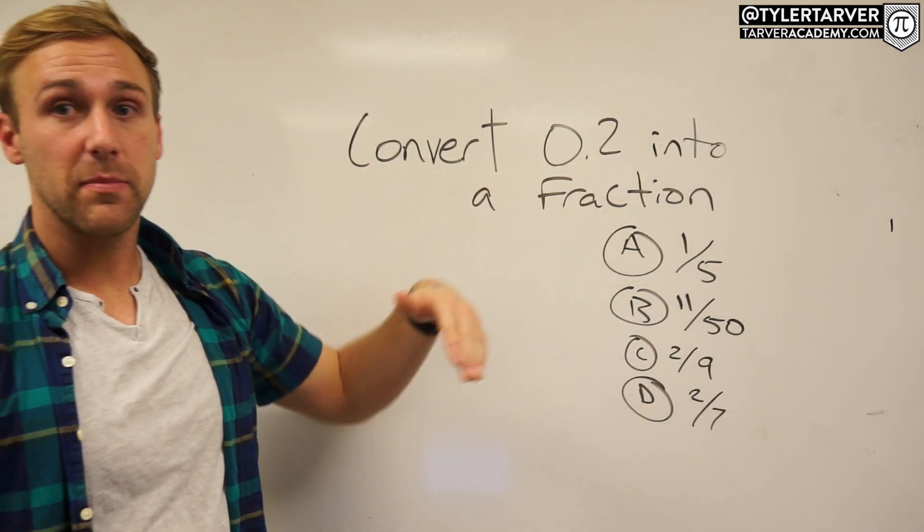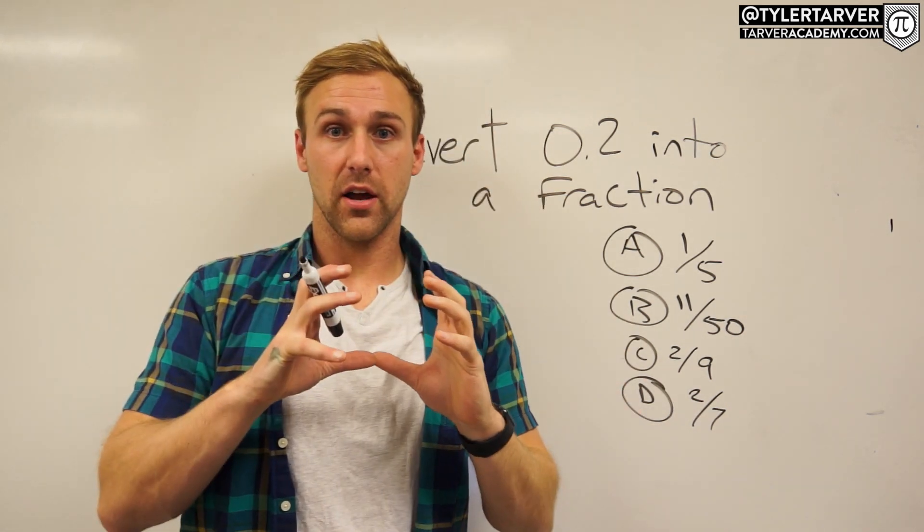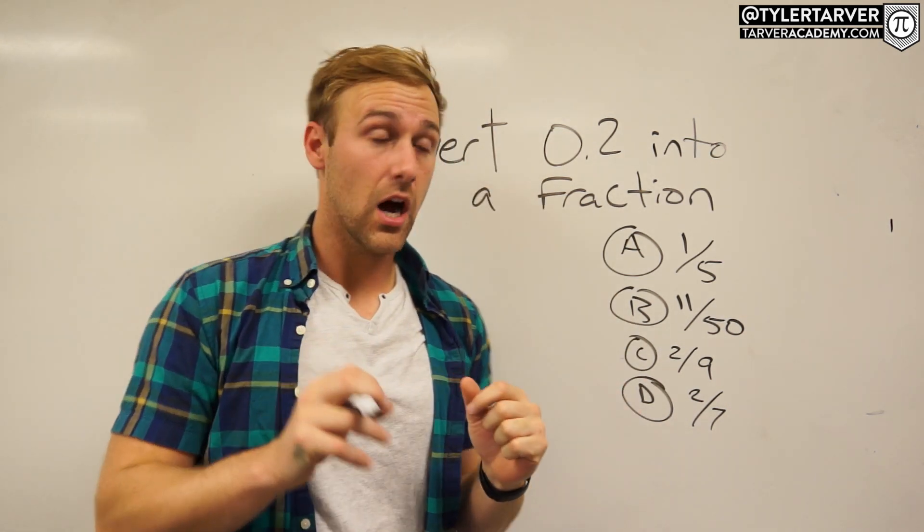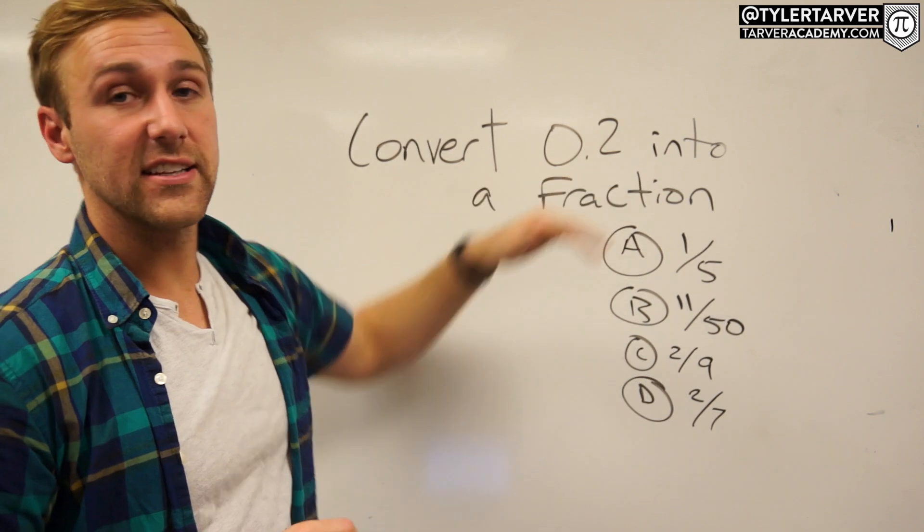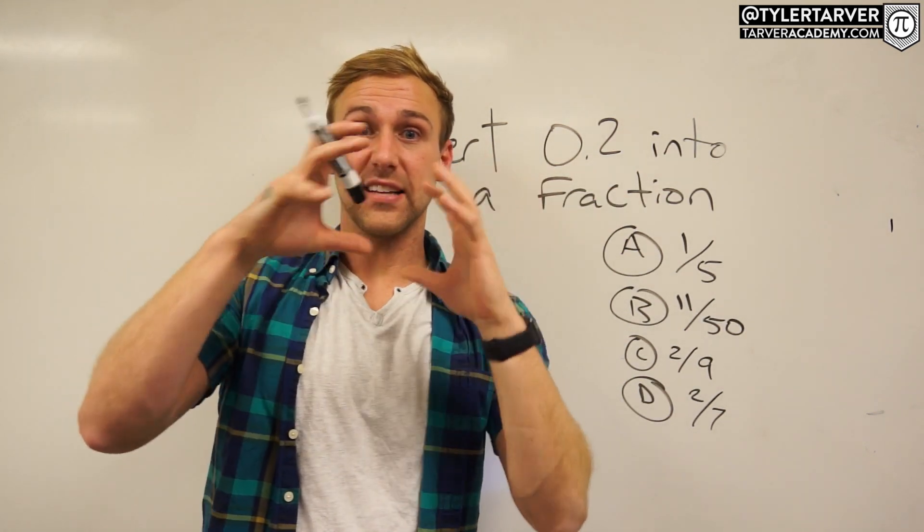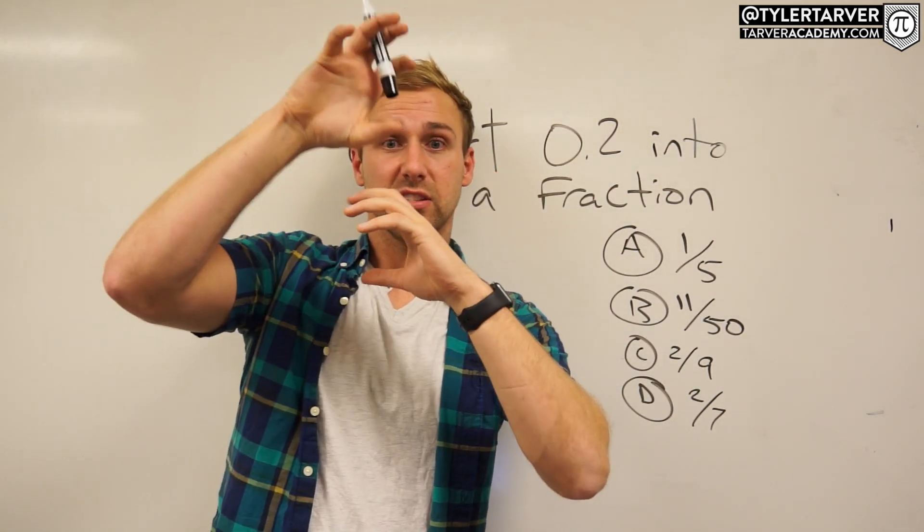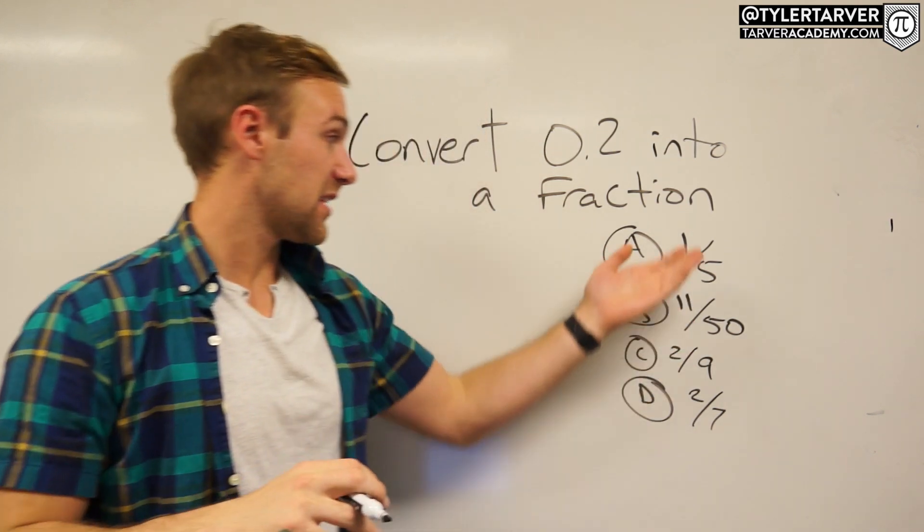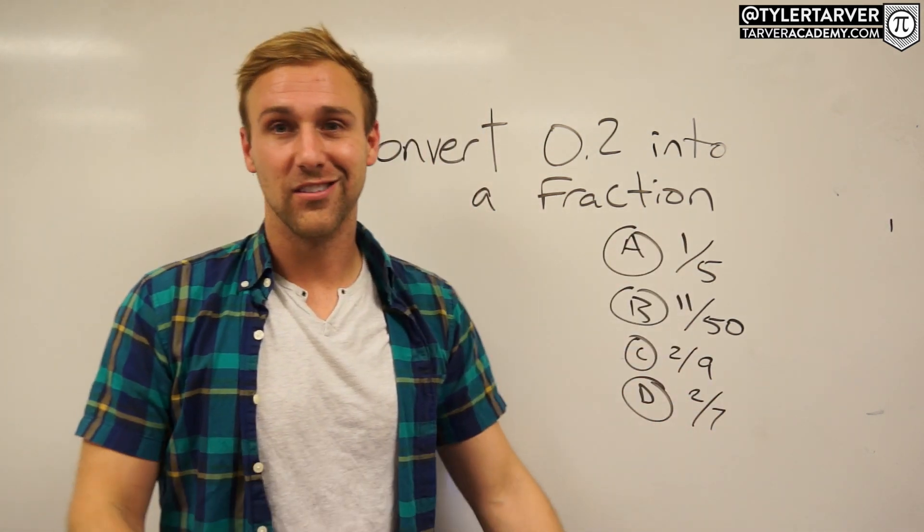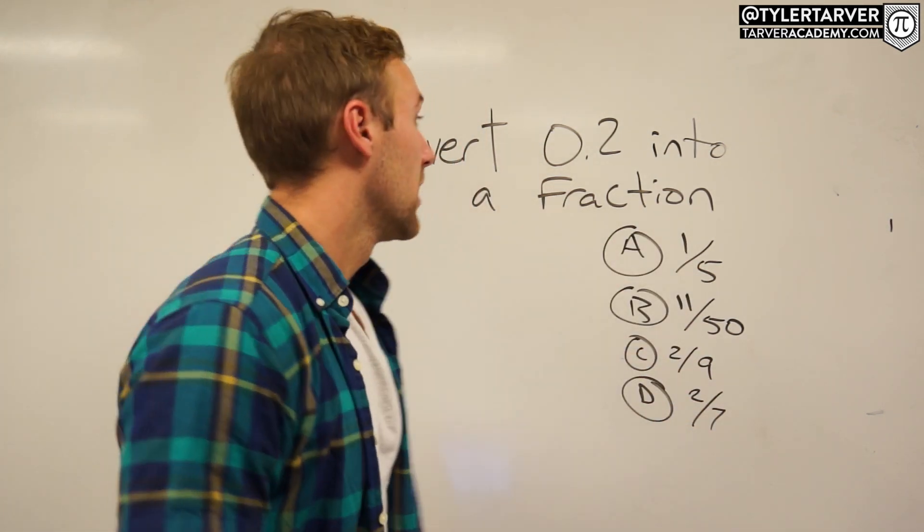Is the number going to be bigger on top than it is on bottom? No it's not, because that is less than one. If it's less than one, the small number's on top, big number's on bottom. Does that disqualify anything? No it doesn't. Would have been cool if it did.